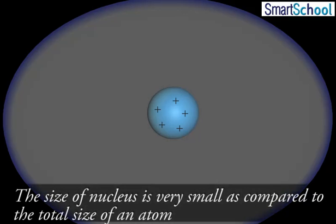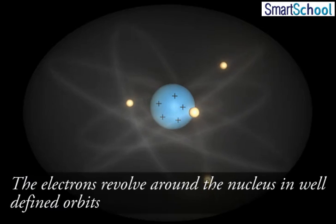The size of the Nucleus is very small as compared to the size of an atom. The electrons revolve around the nucleus in well-defined orbits.